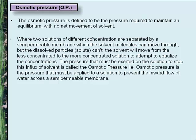Osmotic pressure (OP) is defined as the pressure required to maintain equilibrium with no net movement of solvent, where two solutions of different concentration are separated by a semi-permeable membrane through which solvent molecules can move but dissolved solute particles cannot. The solvent moves from the lesser concentrated to the more concentrated solution. Osmotic pressure is the pressure that must be applied to a solution to prevent the inward flow of water across a semi-permeable membrane.